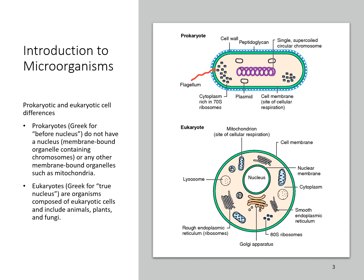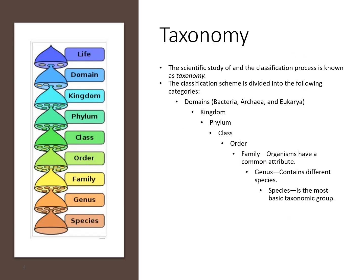Microorganisms can be divided into prokaryotes, which are organisms that do not contain a nucleus or any other membrane-bound organelles such as mitochondria, or they can be divided into eukaryotes, which do have a nucleus within the cell. Taxonomy is the scientific study of and the classification process.